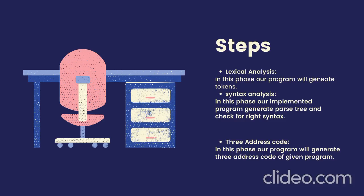After that it enters the phase of syntax analysis. In this phase our implemented program generates a parse tree and checks for correct syntax. It checks whether the syntax of a given input is correct or wrong. If it is correct, it generates a parse tree; if it is wrong, it simply shows an error message.